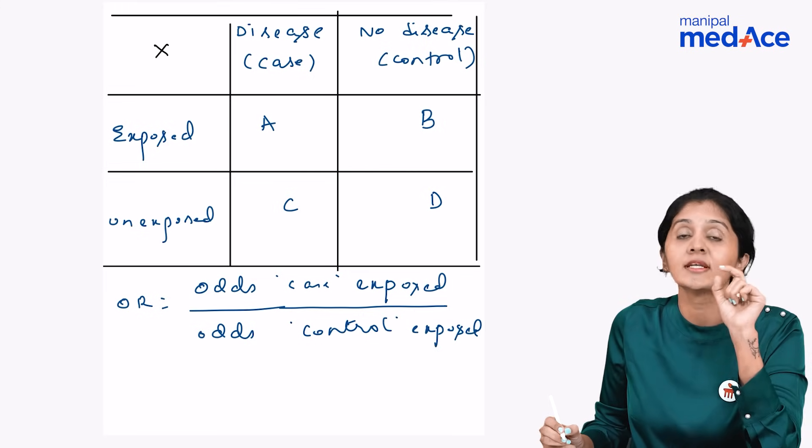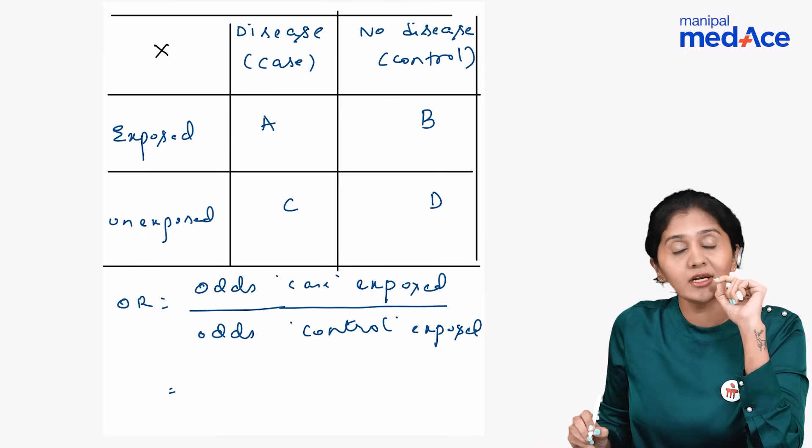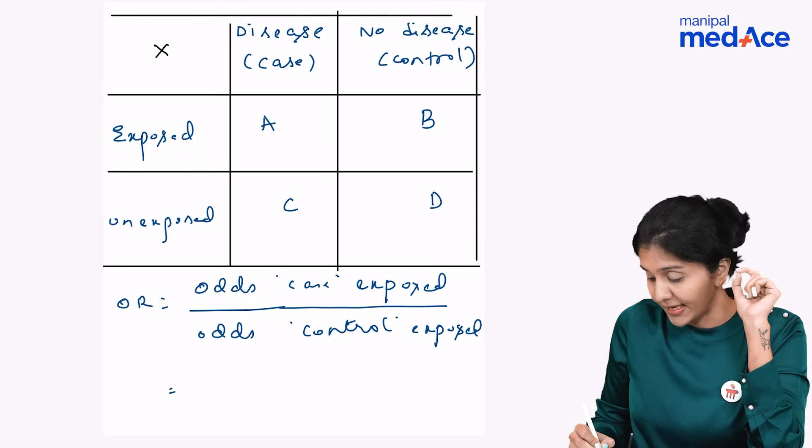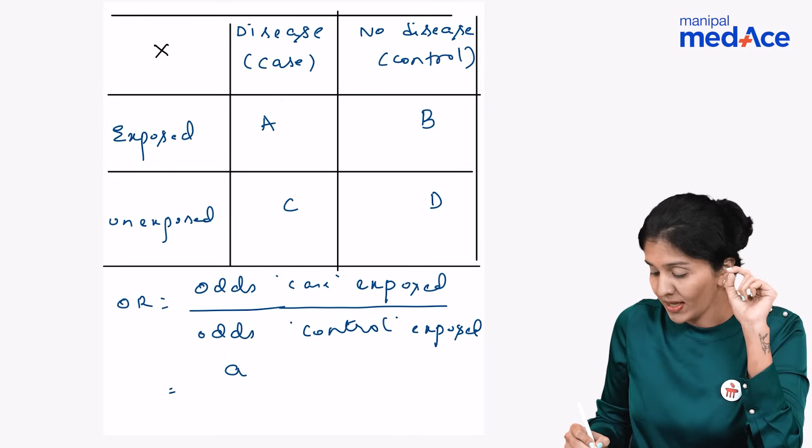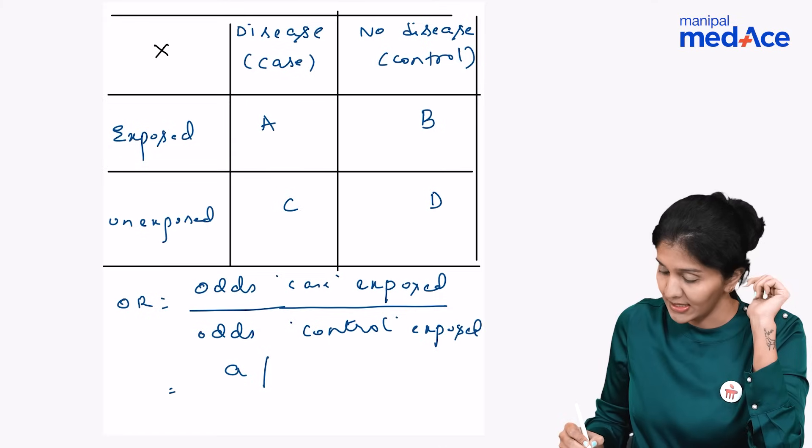Odds ratio is ratio of two odds and odds is ratio of two probabilities. In the numerator what do we have? Odds that a case was exposed, that is the probability of case being exposed, that is A divided by probability that a case was not exposed, that is C.